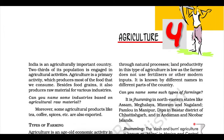Wheat. This is the second most important cereal crop. It is the main food crop in the north and northwestern part of the country. This Rabi crop requires a cool growing season and bright sunshine at the time of ripening. It requires 50 to 75 centimeters of annual rainfall evenly distributed over the growing season. There are two important wheat-growing zones in the country: the Ganga-Sutlej Plains in the northwest and the black soil region of the Deccan. The major wheat-producing states are Punjab, Haryana, Uttar Pradesh, Bihar, Rajasthan, and parts of Madhya Pradesh.